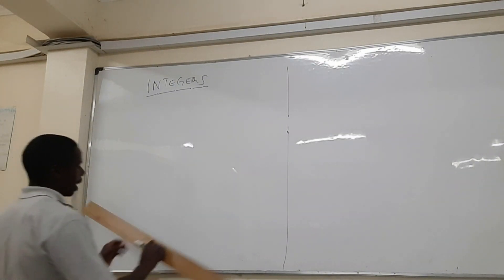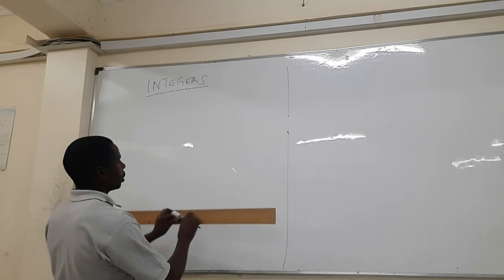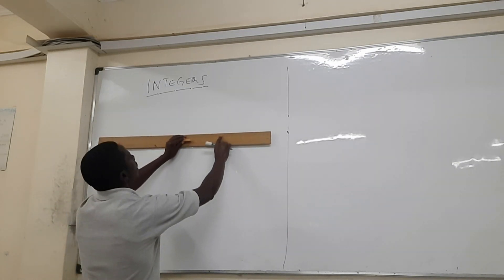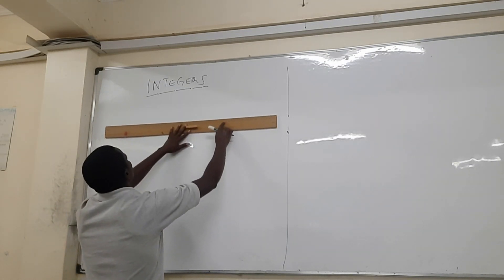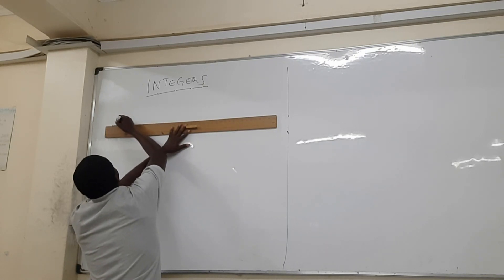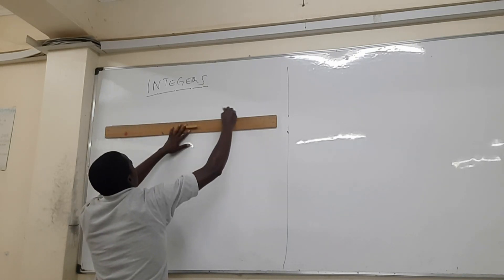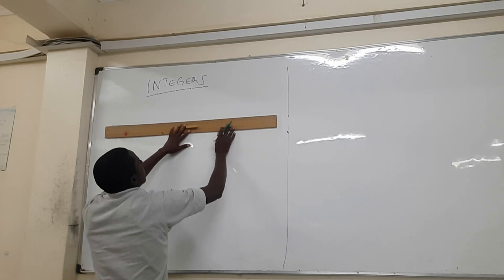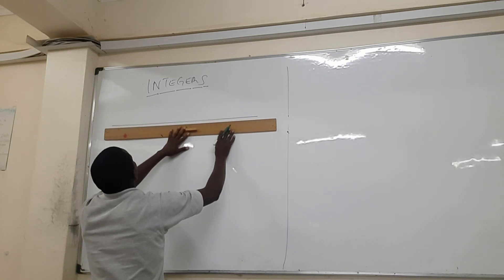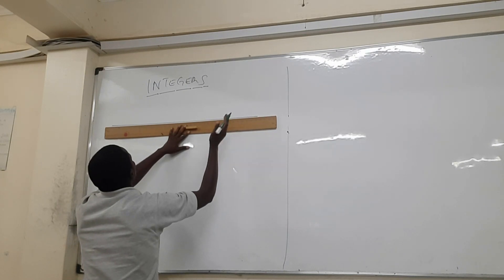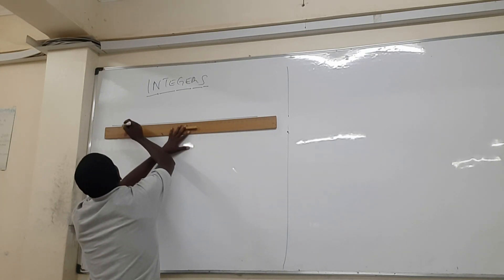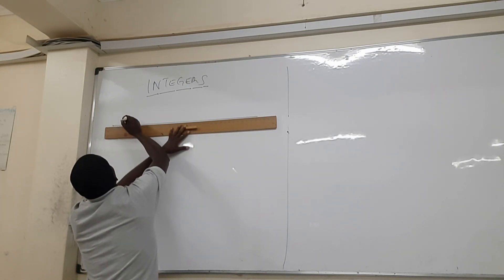To draw a number line, first you need a ruler, then just make a straight line. On the line we have equal intervals marked like this.